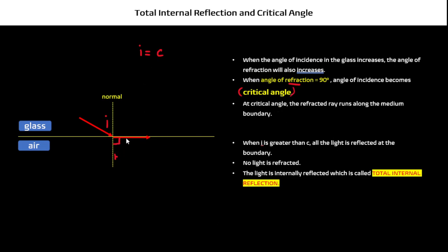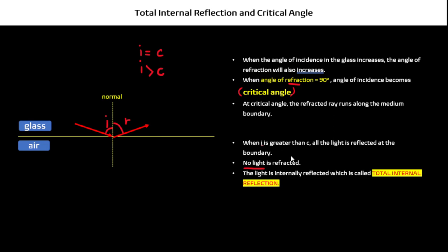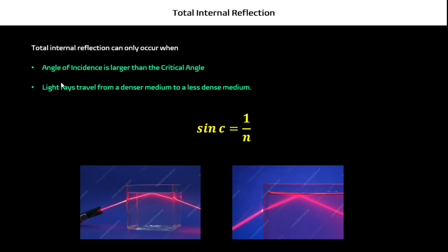At the critical angle, the refracted ray is running along the boundary. But if you increase your angle of incidence further, meaning your angle of incidence has now become greater than your critical angle, the ray will undergo something called total internal reflection. At this point, there will be no refraction — it will only be totally reflected. Total internal reflection can only happen when your angle of incidence is larger than your critical angle, and the light rays are travelling from a denser medium to a less dense medium.